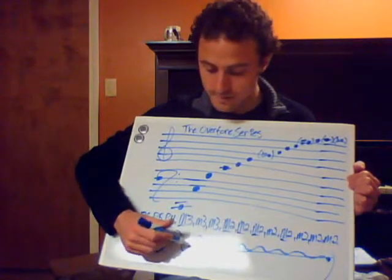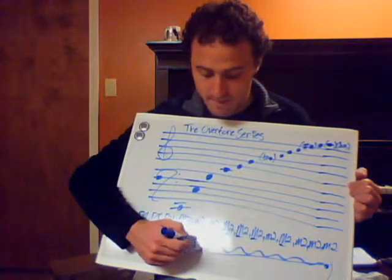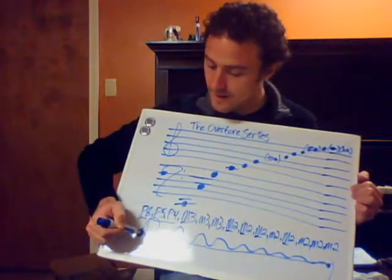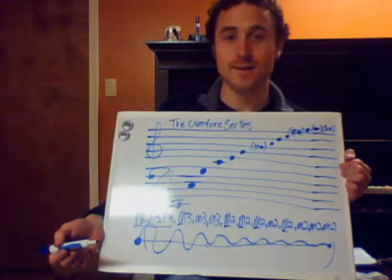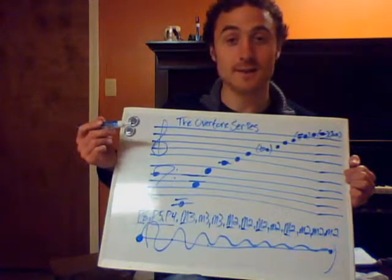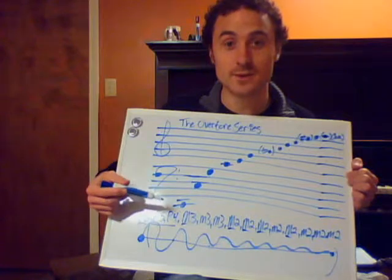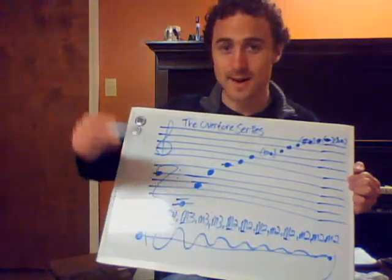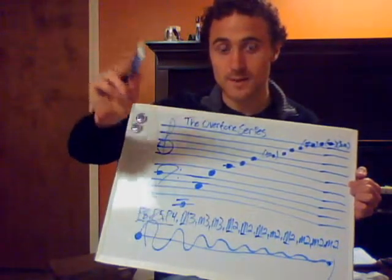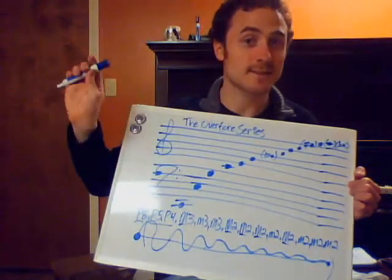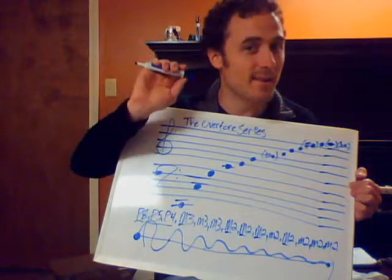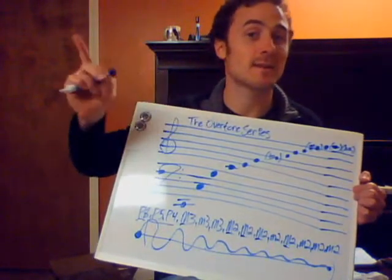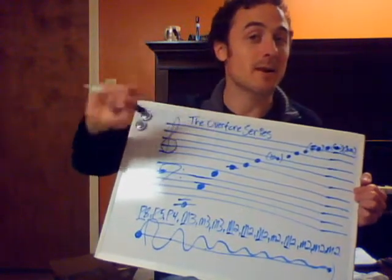These are the dividing points of every single division of the initial note, and this is what we understand as the overtone series — because this is actually the measurement of these dividing points that are resonating in the atmosphere. These are the tones we hear after the initial tone and how the atmosphere actually affects our ear as it resonates.